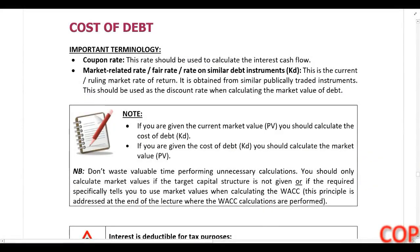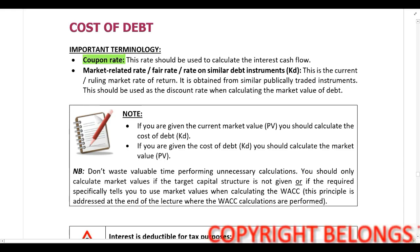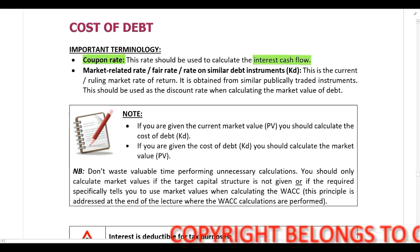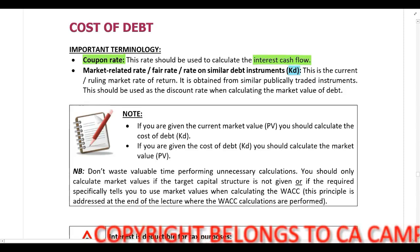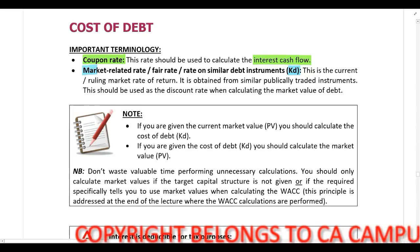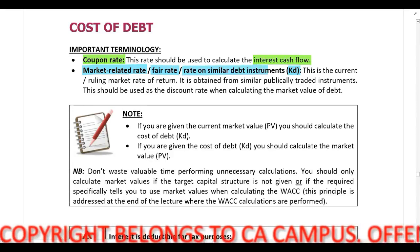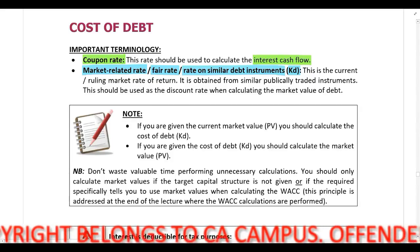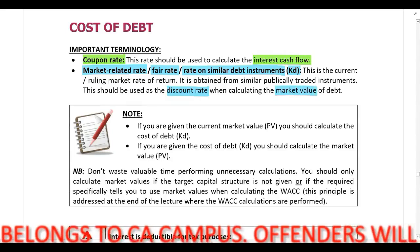We are now going to look at the cost of debt. The coupon rate is always used to calculate your cash flow, so when dealing with debt, the coupon rate is used to calculate the interest cash flow. The cost of debt — referred to as the market-related rate, the fair rate, or the rate on similar debt instruments — is used as the discount rate when calculating the market value of debt.